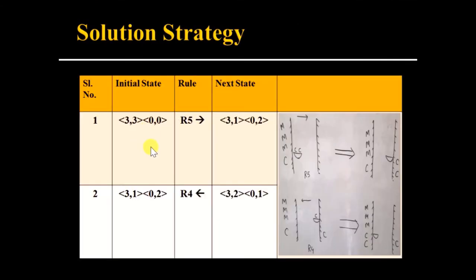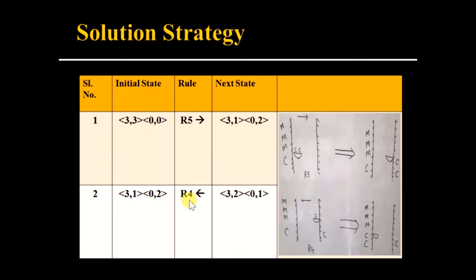In the solution strategy, we initially move two cannibals from riverside one to riverside two by applying Rule 5. The initial state is 3300; after applying the rule, we get three missionaries and one cannibal on riverside one and two cannibals on riverside two — state 3102. Then, applying Rule 4 in reverse, the boat carries one cannibal from riverside two back to riverside one, giving state 3201.